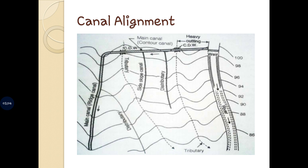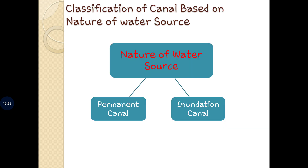Next is the ridge canal. When the canal is aligned along the natural watershed line or ridge, it is called a ridge canal. A large area can be brought under cultivation due to the ridge canal, and thus it has a higher command area. Next is the side slope canal — when the canal is aligned at right angles to the contour of the area, it is called a side slope canal, as seen in the image. Such canals are neither aligned on the watershed nor in the valley, but somewhere in between along the slope.